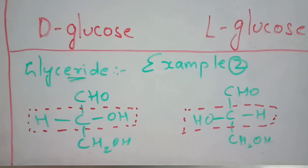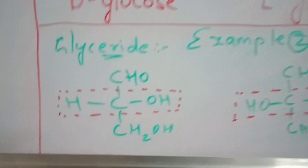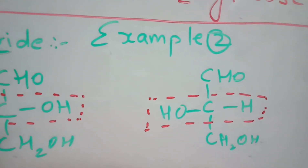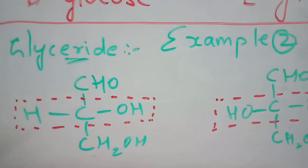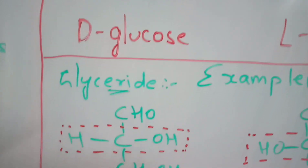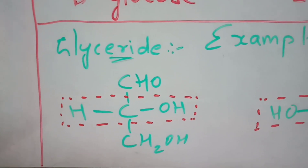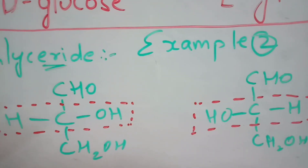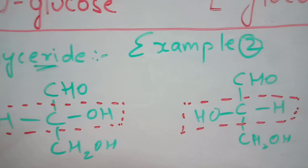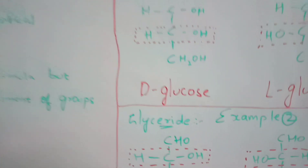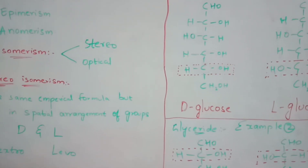In D-glyceraldehyde, H is on the left side and OH is on the right side of the carbon. In L-glyceraldehyde, this is completely reversed after the spatial rearrangement of the groups. That is the main aim of stereoisomerism. Now let us discuss optical isomerism.